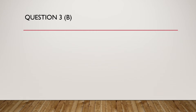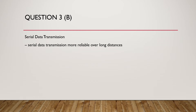Part B: A factory is connected to a printer located in an office one kilometer away. Identify which data transmission method would be most suitable for this connection. The answer is serial. Two reasons: firstly, serial data transmission is more reliable over long distances; secondly, it is a cheaper connection as only a single wire is needed.